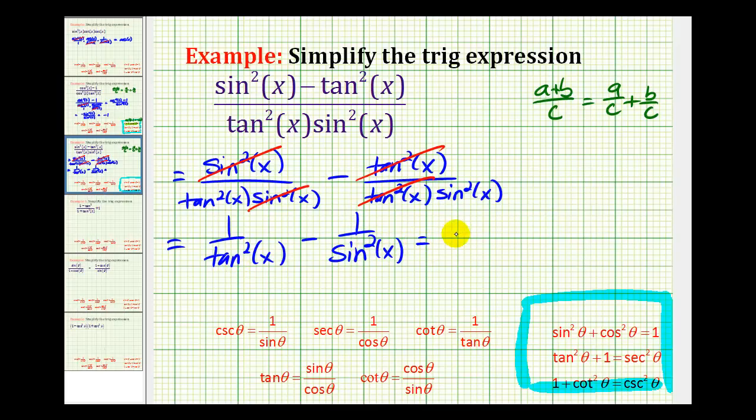Well, one over tangent squared x would be cotangent squared x. And one over sine squared x would be cosecant squared x.